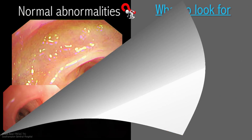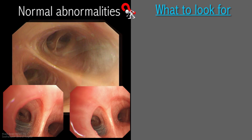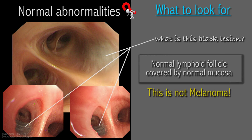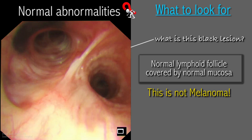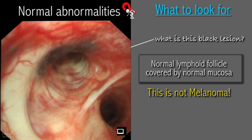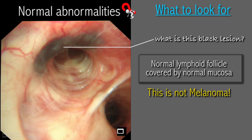Also common is the finding of submucosal black discoloration, which represents normal lymphoid tissue and can be confused with melanoma. The covering mucosa has a normal sheen to it, and this differentiates it from a cancerous process.